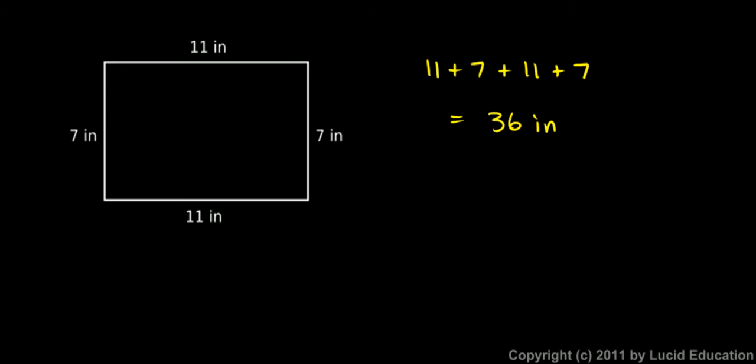Every rectangle has four sides. Two of the sides we typically call the width, and two we call the length — or you might call them height and length. Two of the sides go by one name, and two of the sides go by the other name. So instead of referring to a specific rectangle like we have here, we could refer to a general rectangle.